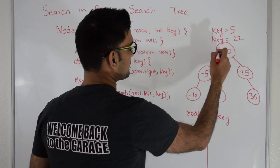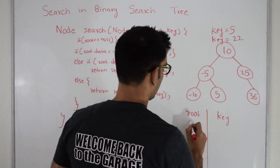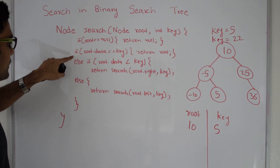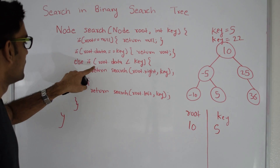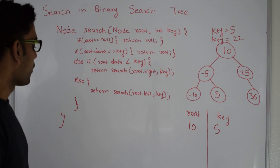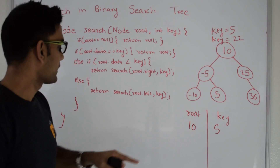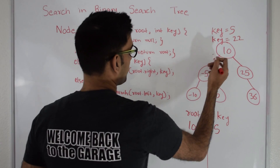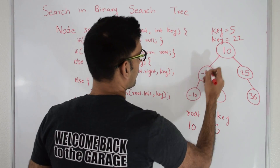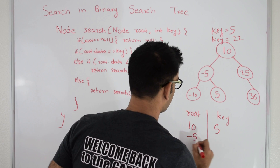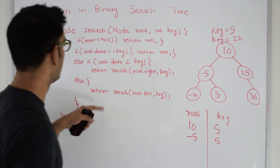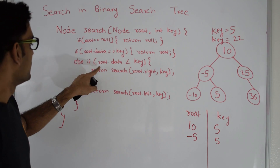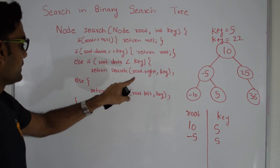Let's try with this example. My key is 5 and my root is 10 initially. Root is not null. Root data is not same as key. Root data is not less than key because 10 is not less than 5, so we go into search on root's left. So my new root is minus 5 and the key I am looking for is still 5. Again root is not null, root data is not same as key. Root data this time is less than key.